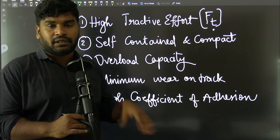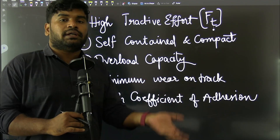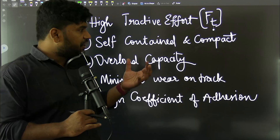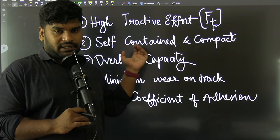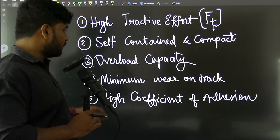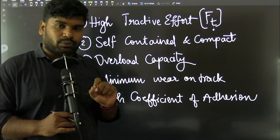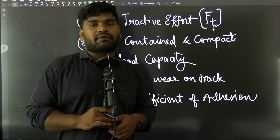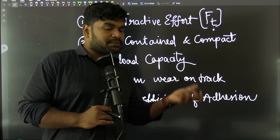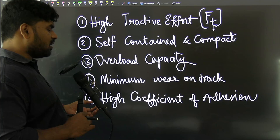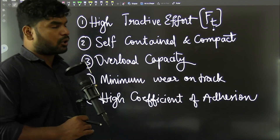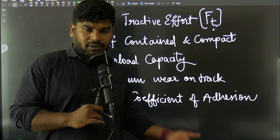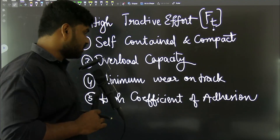Third quality is overload capacity. The vehicle quality may not seem obvious, but since traction is a rough-end application, the system must be able to withstand overloads temporarily or for a prolonged duration. For example, in a city bus, there is always an overload condition. Fourth, minimum weight on the track — the vehicle should exert minimum weight on the track and ground.